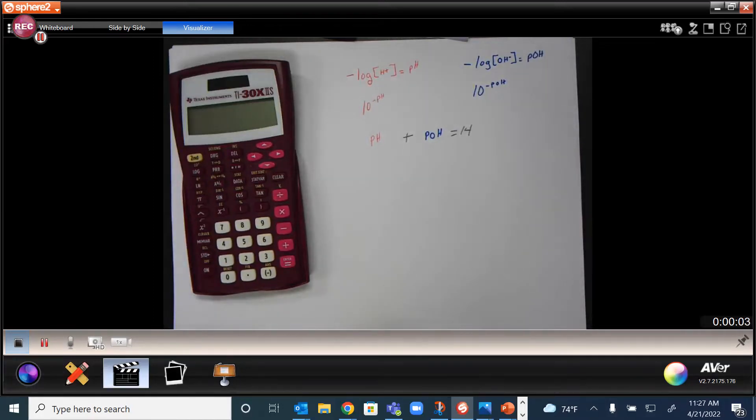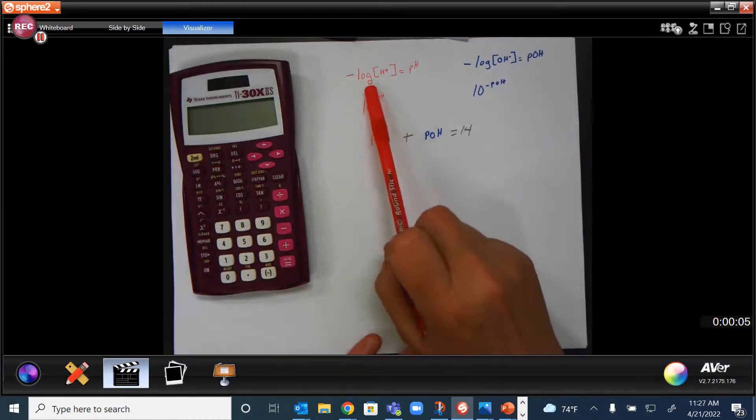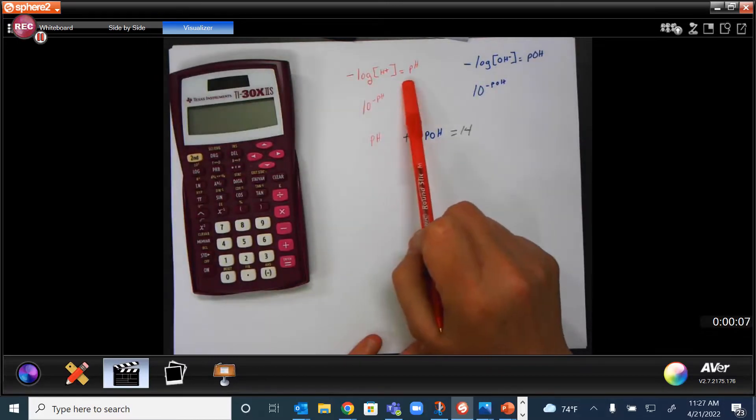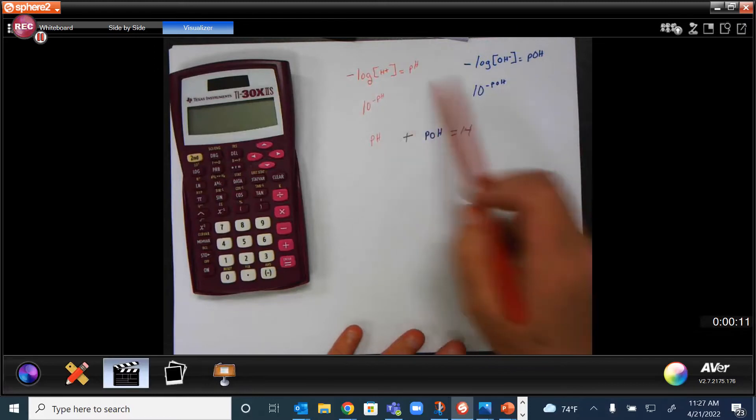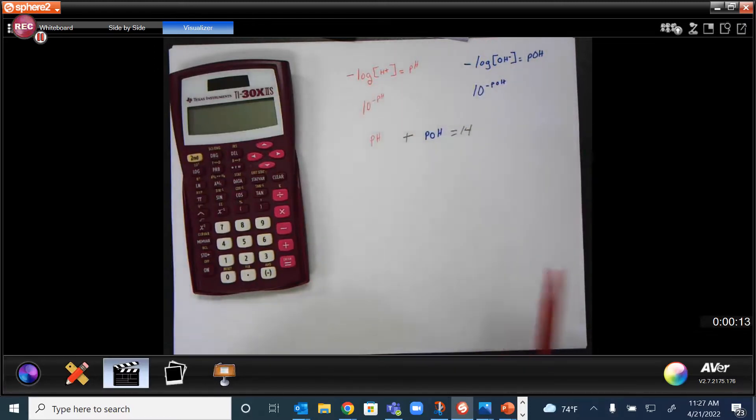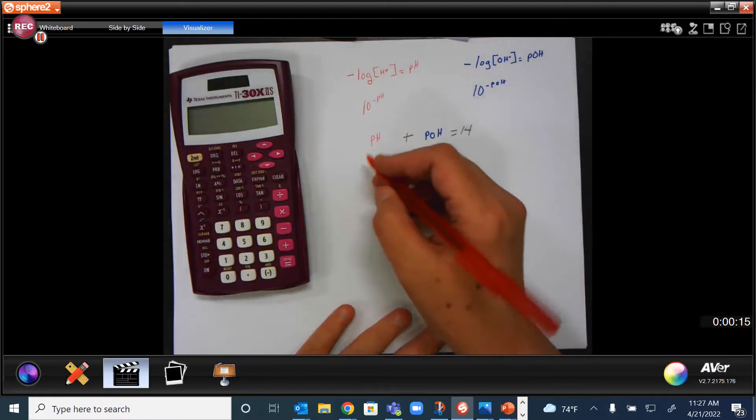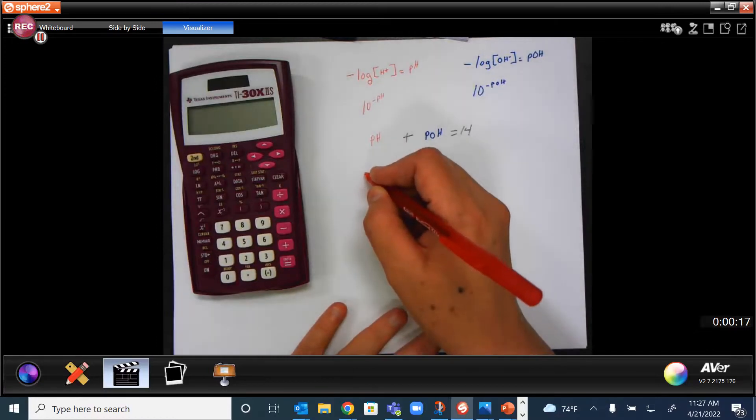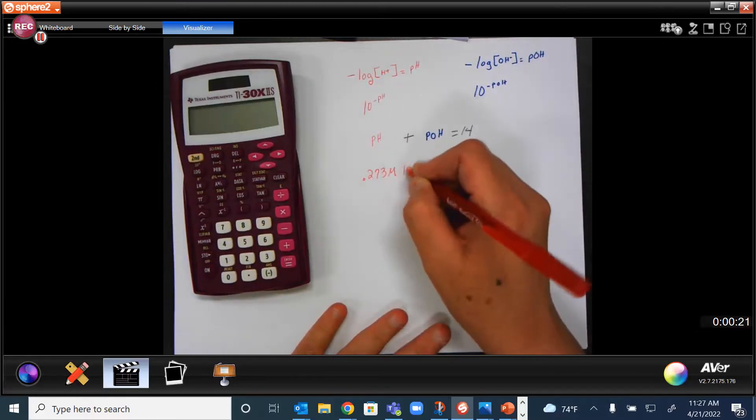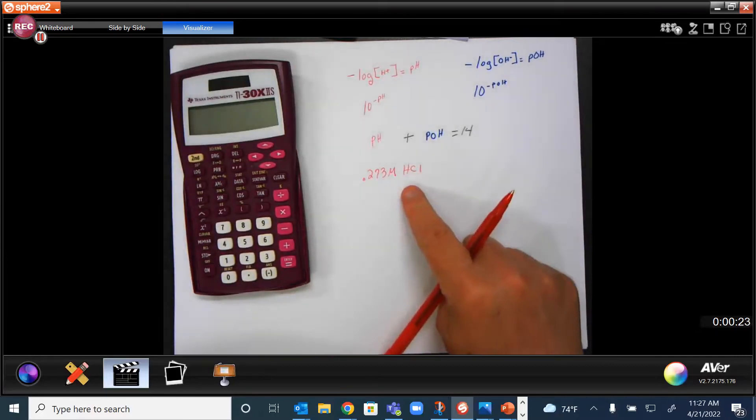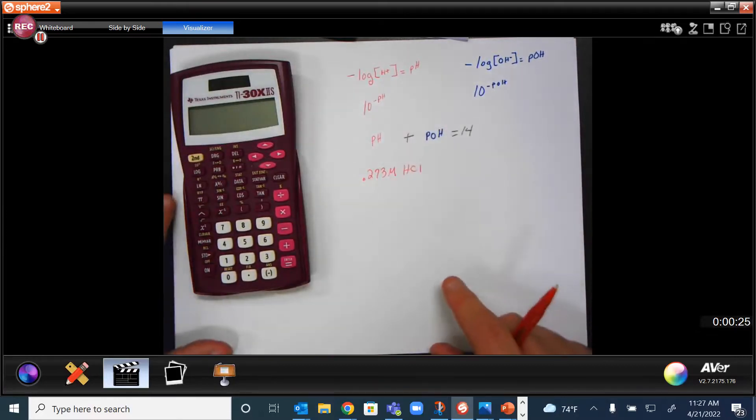Okay, I'm going to give this a try. I don't know how this will work, but if you're trying to find the negative log of H plus concentration to find pH, if you're trying to find pH or you're trying to find pOH, here's how you put it in your calculator. So if I have a problem that says I have a molarity of 0.273 molarity of HCl, that's an acid, so you're going to use the negative log. So you're going to do,